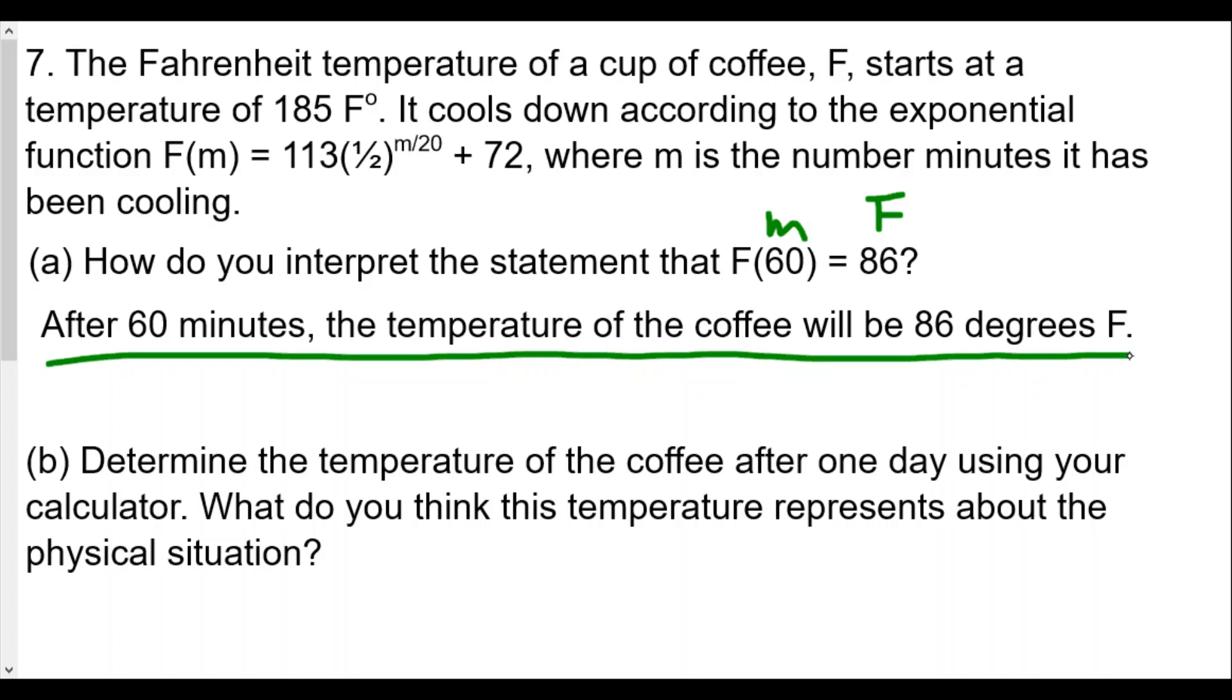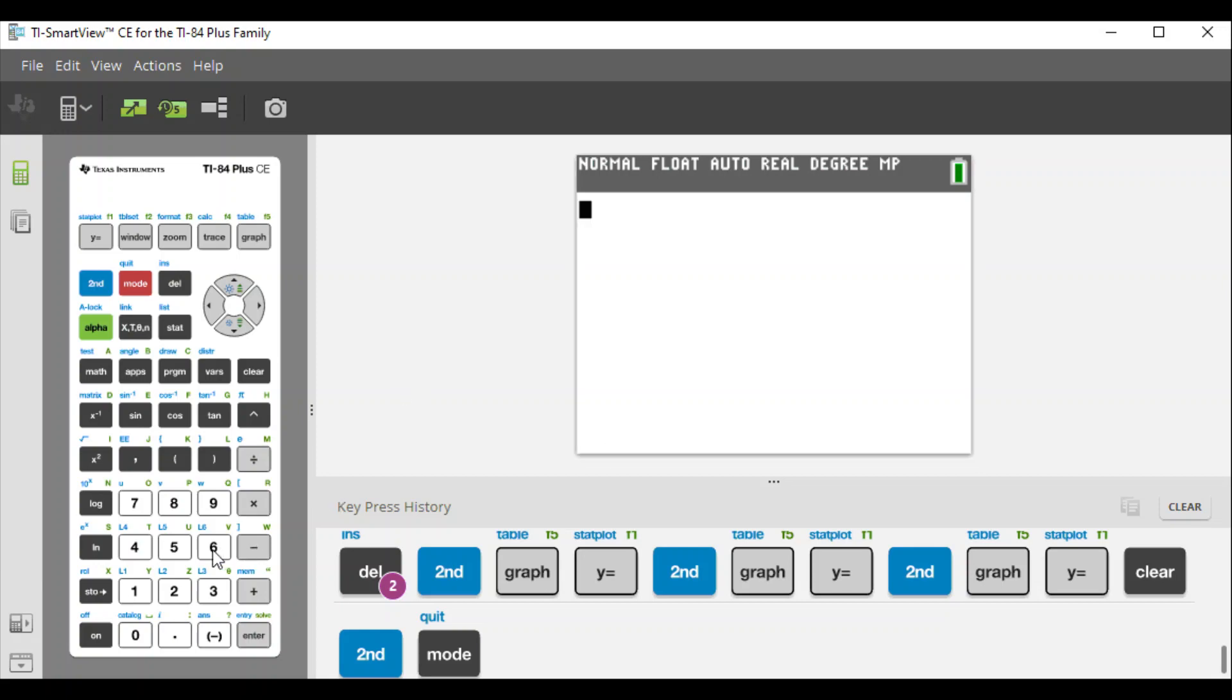Part (b): determine the temperature of the coffee after one day using your calculator. Our function is 113 times (1/2) to the m over 20 plus 72. We want to figure out how many minutes are in a day. Let's do it on our calculator - there are 60 minutes in an hour and 24 hours in a day.